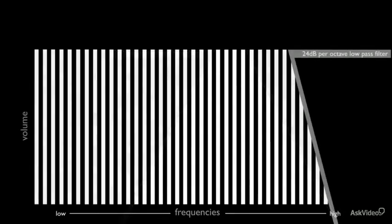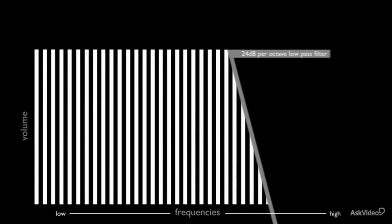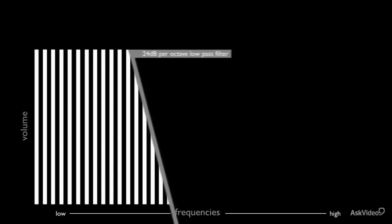The degree to which the harmonics in the region of the cutoff point are removed is called the slope. It is visually demonstrated by the angled bar in the graphic.